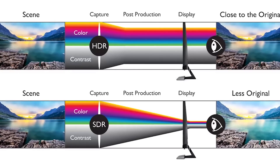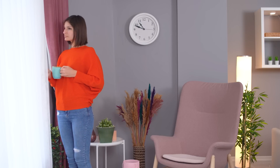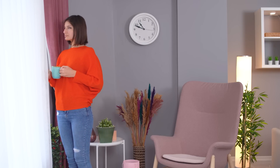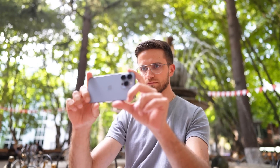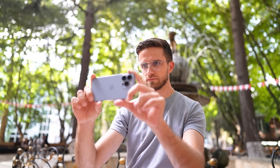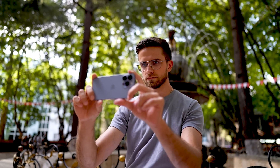Our eye perceives the highest dynamic range compared to today's cameras, at least for now. When we stand in a room and look out the window on a bright sunny day, we can see the room as well as the street — there are no overexposed areas. This is exactly what you can't do with a lot of cameras; it's either too overexposed or underexposed.